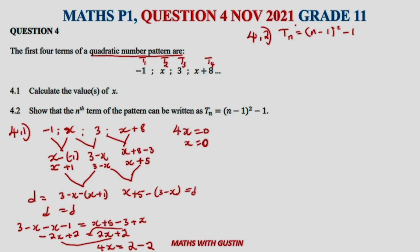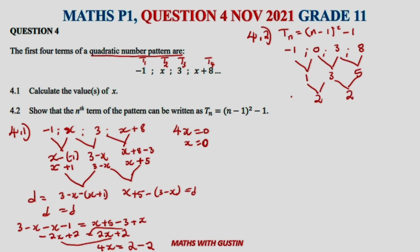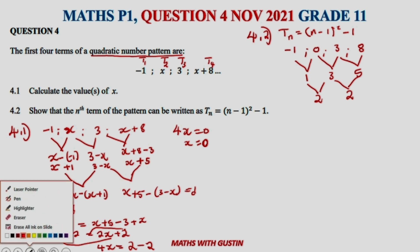Substituting x equals zero gives the sequence: minus 1, 0, 3, 8. The first differences are 1, 3, 5, and the second difference is 2 in both cases. For a quadratic pattern general formula, always remember — this will not be on your formula sheet — that 2a equals the common second difference, 3a plus b equals the first difference of the first term, and a plus b plus c equals the first term.